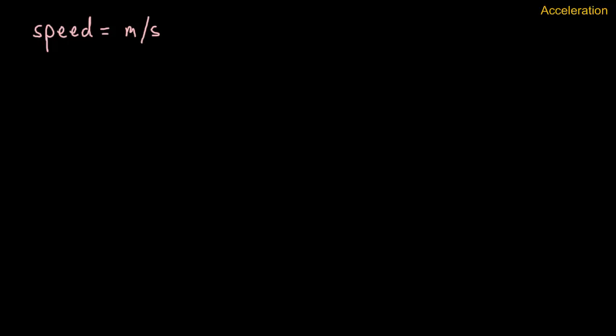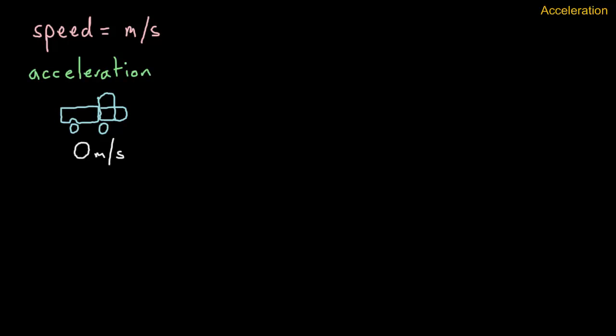Let's take a look at acceleration. First of all, you need to watch the video on speed — if you remember from that video, we know that speed is measured in meters per second. Now let's take a look at acceleration. We're going to look at a little truck, and when the truck starts, there's no speed, so we can say the speed when it starts is zero meters per second.